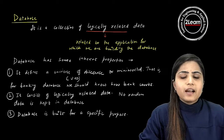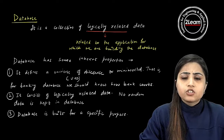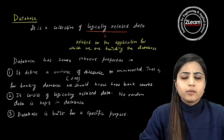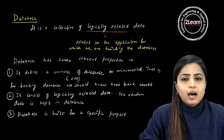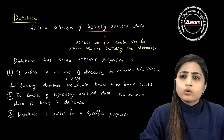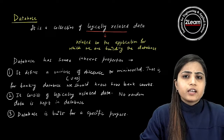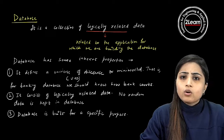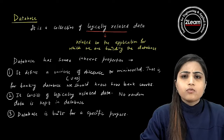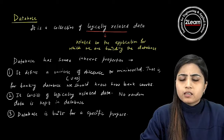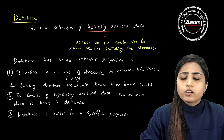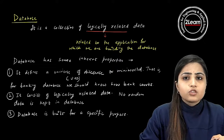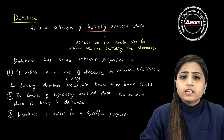The third property is that a database is built for a specific purpose. If you have made a database, it will be for a specific application. A banking database is for banking, a university database is for a university, a hotel database is for a hotel. You cannot mix them because banking operations are different from university operations. There is no single database that can satisfy all applications.